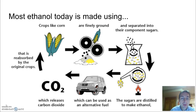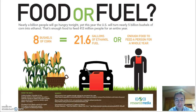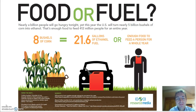It's going to produce some carbon dioxide, but you would argue it's neutral because it gets reabsorbed by the next round of crops taking that carbon dioxide in. But one of the questions people have is: is this really a good strategy? We're taking a food product and making a fuel, and as this graphic shows, eight bushels of corn could equal 21.6 gallons of fuel, or it could be enough food to feed a person for an entire year. That's a lot of food just to equal 21.6 gallons of fuel, so that's certainly a concern.